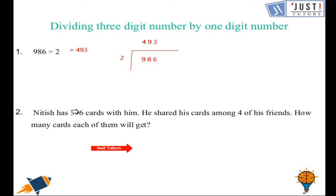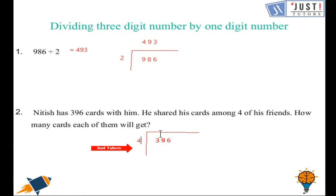Now let's read a worded problem: Nitesh has 396 cards. He shares his cards among four of his friends. How many cards will each of them get? We need to divide 396 by four. Four goes into three zero times; four goes into 39 nine times because four times nine is 36, with a leftover of three. Then four goes into 36 nine times. So each of his friends will get 99 cards.